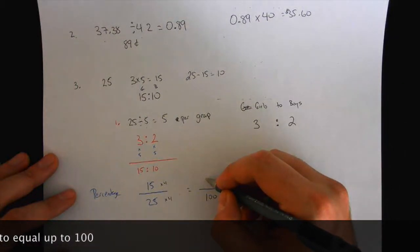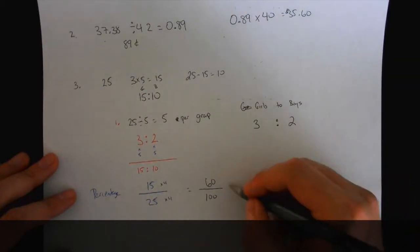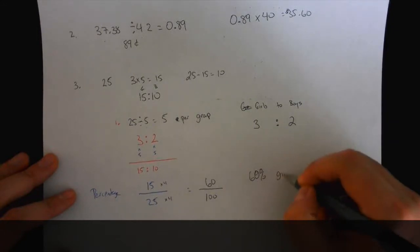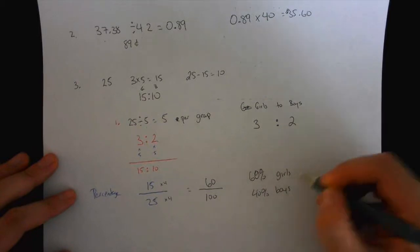How about 60 over 100? Sounds good to me. So 60% girls and 40% boys. Because percent is always out of? Perfect.